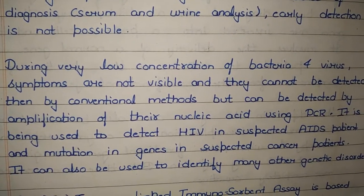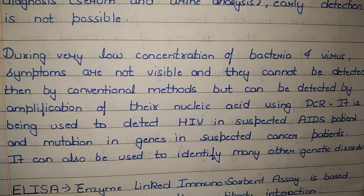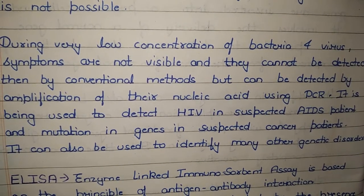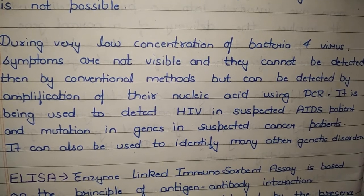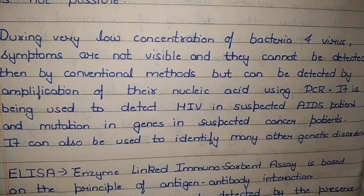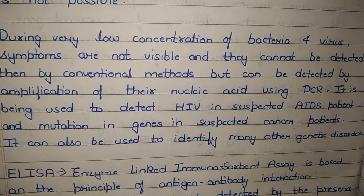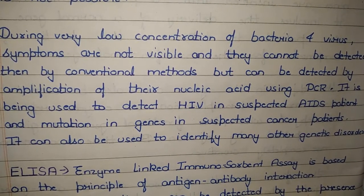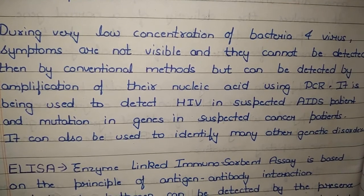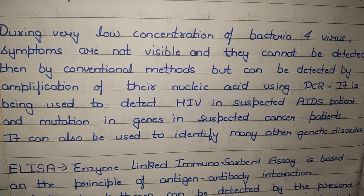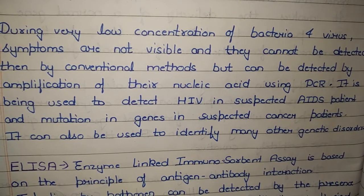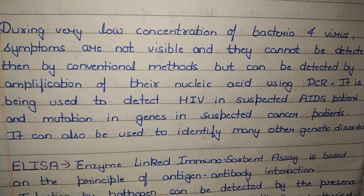PCR is used to detect HIV in suspected AIDS patients and mutations in genes in suspected cancer patients. It can also be used to identify many other genetic disorders, making it a powerful tool for molecular diagnosis.